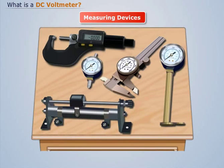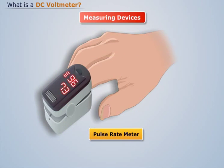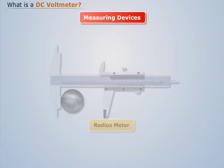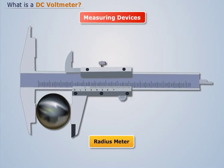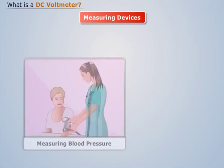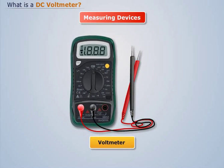We use various measuring devices to measure pulse rate, radius, and blood pressure. Similarly, a voltmeter is used to measure voltage.